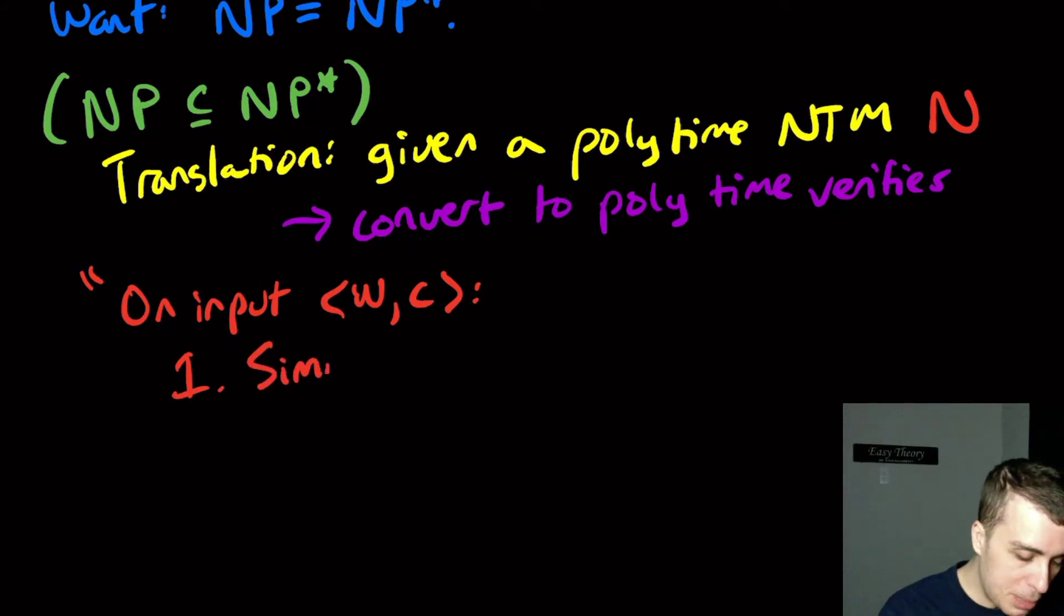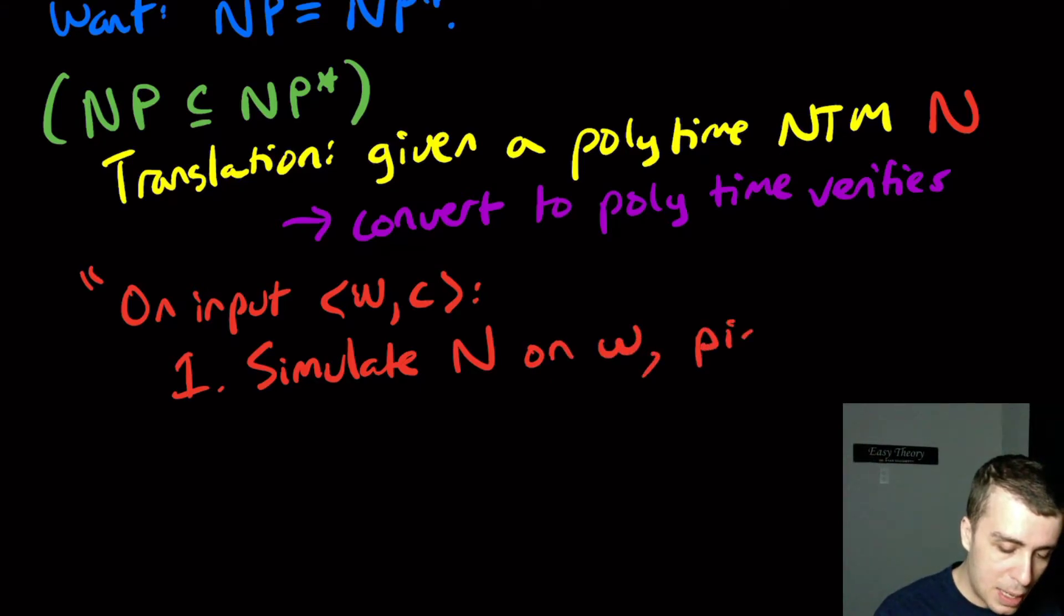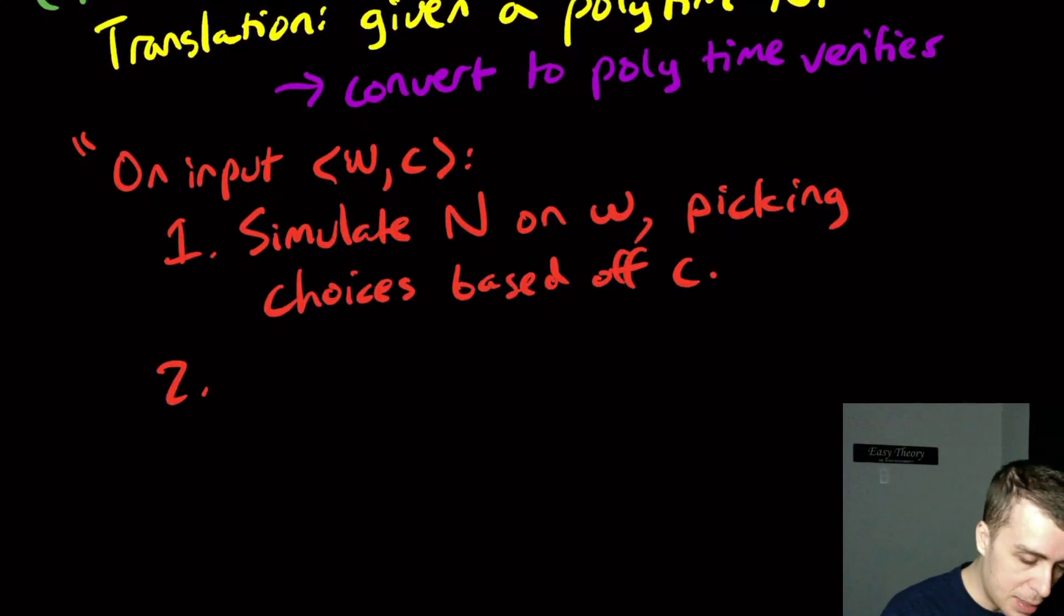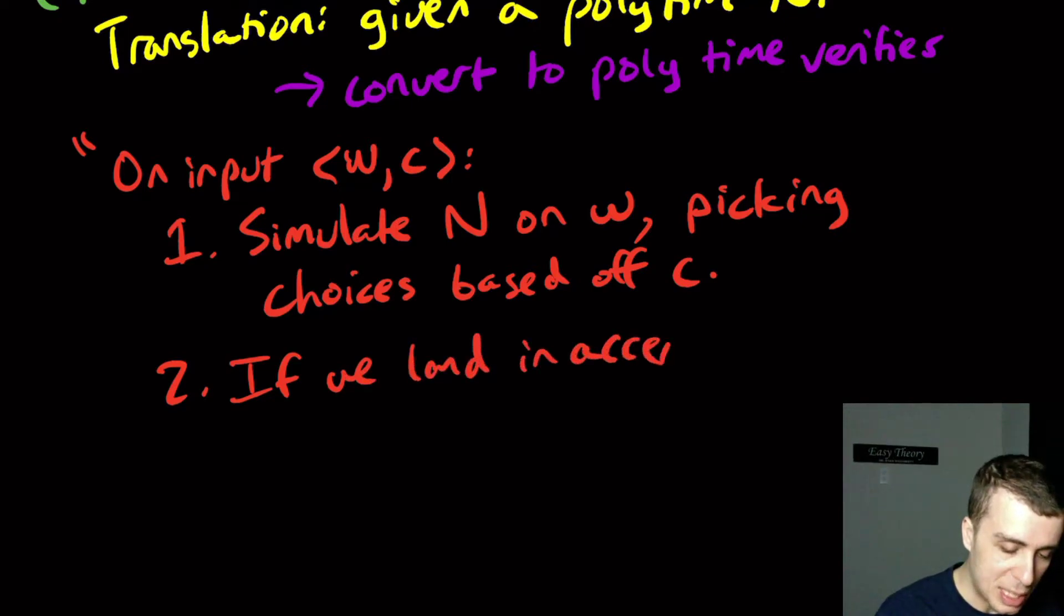So let's simulate this machine N on W, picking the choices that are made based off of C, off the characters of C. So like the first character of C could encode the actual first transition that was made. And then the second character is the second choice of transition that is made, et cetera. And then we just say if we land in the accept state, we should accept, otherwise reject.